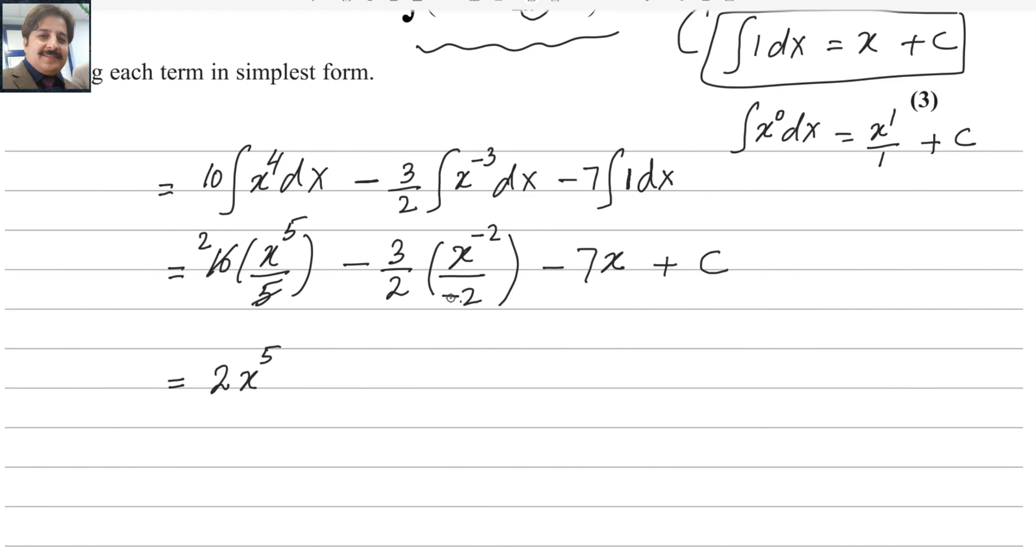And in the next one, this minus and that minus makes it plus. 3 over 4, because 2 multiplied by 2 will be 4. So 3 over 4 x to the power minus 2, and minus 7x plus c. This is the answer for question number 1. Hopefully, you understand it.